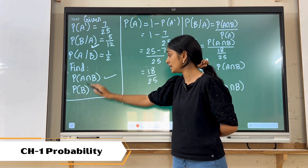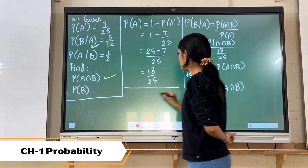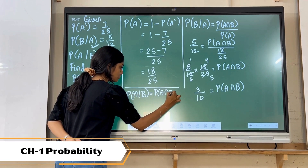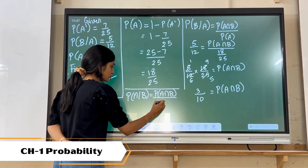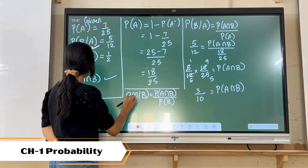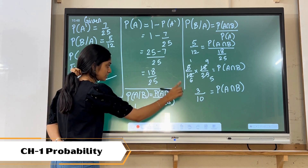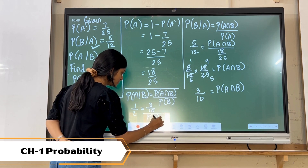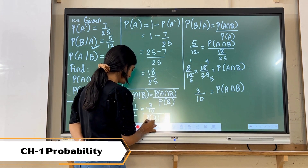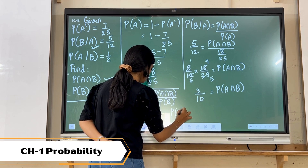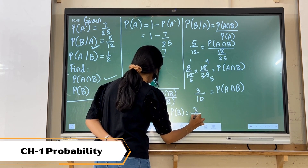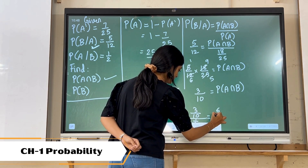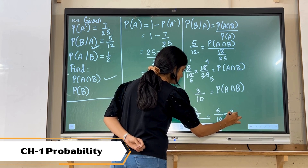Now we are supposed to find P of B. As we are having the value of P of A slash B, the formula is P of A intersection B upon P of B. We have P of A slash B equal to 1 upon 2, and the intersection value is 3 upon 10. So P of B is equal to 3 upon 10 divided by 1 upon 2, that is 6 upon 10, which is 3 upon 5.